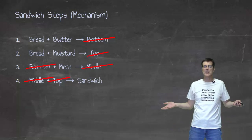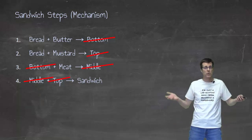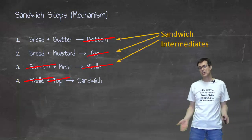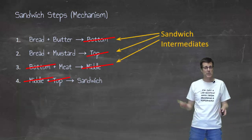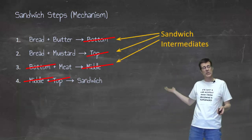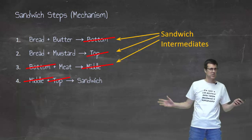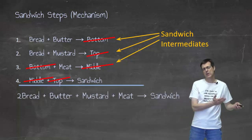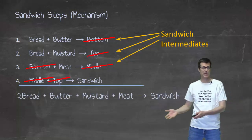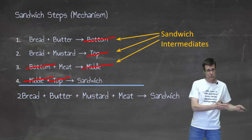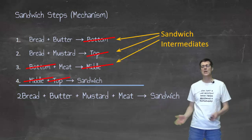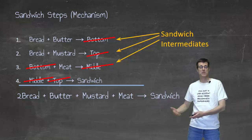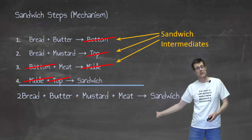By the time I'm done, my overall steps show me the recipe because I've gotten rid of all my sandwich intermediates and I now have my full sandwich — my full reaction for the sandwich — which is two breads, butter, mustard, meat, and making a sandwich.